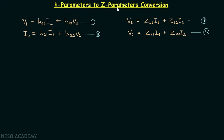Here we are trying to convert the H parameters to Z parameters, that is, we want to find out Z11, Z12, Z21, and Z22 in terms of H11, H12, H21, and H22.